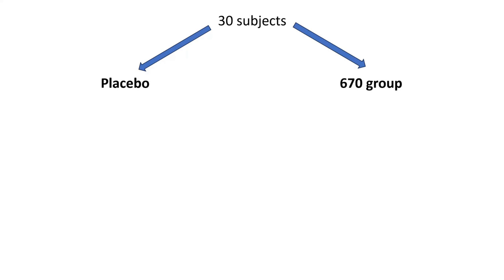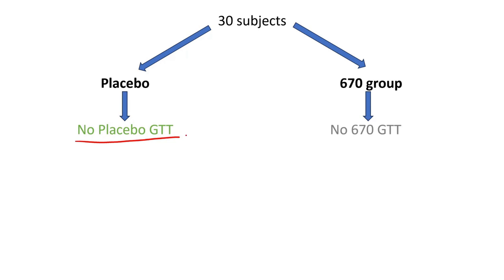They were looking for a non-invasive, non-pharmaceutical way of dropping blood sugars. So they took 30 subjects and randomized them into two groups — a great way of eliminating confounders and biases. There was a placebo group and what we'll call the 670 group, which would be exposed to red light at 670 nanometers. They first took a baseline measurement in both groups without doing anything — no placebo and no 670 — just a glucose tolerance test.